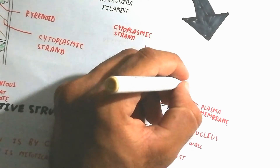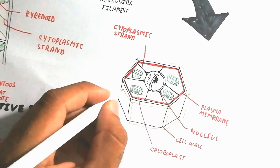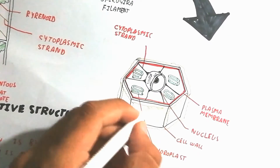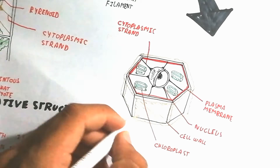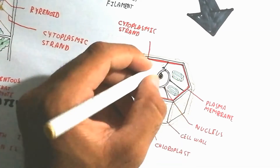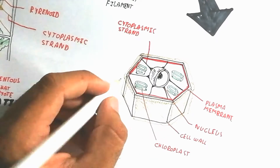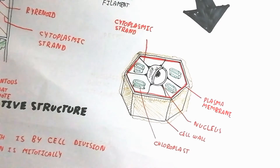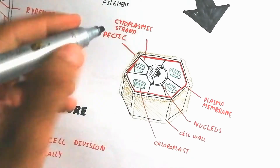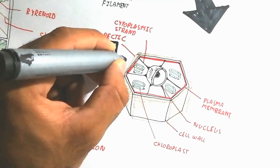An interesting feature is the slimy structure that covers the filament, known as pectic material. This pectic material is used for attachment — it converts into mucilage material at the rhizoid, allowing attachment to the substratum. This mucilage content will be discussed further in a biochemistry video.